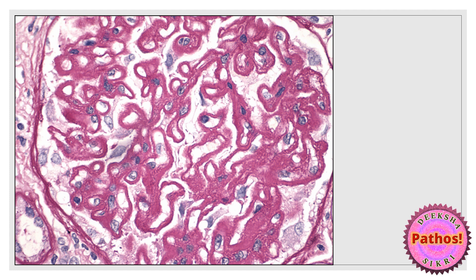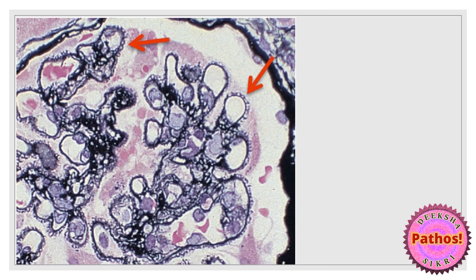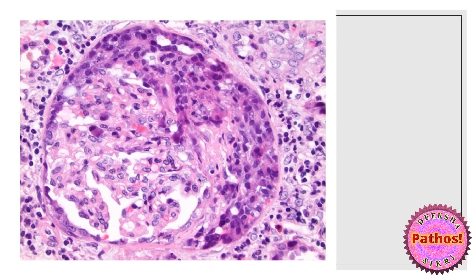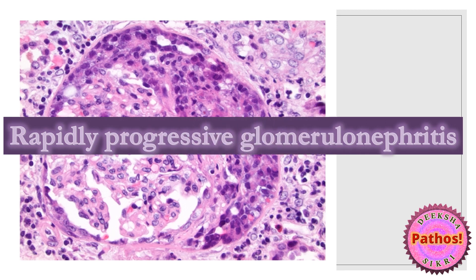The PAS stain slide with a thick thick basement membrane is a case of membranous nephropathy. On silver stain, the perpendicular areas coming out from the basement membrane are called the spike and dome appearance of membranous nephropathy. This happens due to subepithelial deposits formed between the podocytes and the basement membrane, and new basement membrane production. The crescent photograph is a case of rapidly progressive glomerulonephritis — the clinical term — and on histology it is called crescentic glomerulonephritis.